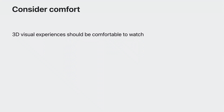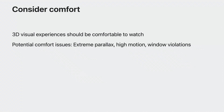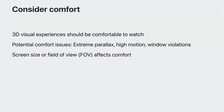Before closing, I want to emphasize that visual comfort is a key content design goal for 3D experiences. 3D content should be comfortable to watch for sufficiently long durations. Some 3D content characteristics that could potentially cause comfort issues include extreme parallax — both negative and positive — high motion in the content causing focusing difficulties, and depth conflicts resulting from window violations. Screen size may also affect viewing comfort depending on how much of the screen is in the viewer's horizontal field of view, and the user can affect the screen size by positioning it nearer or farther.